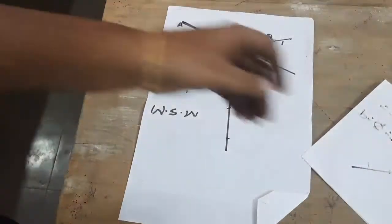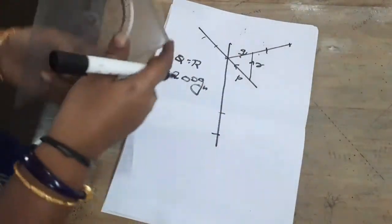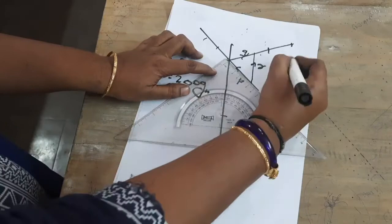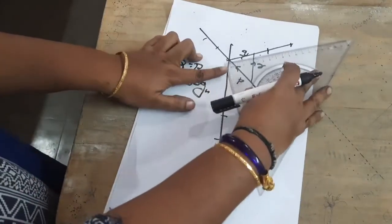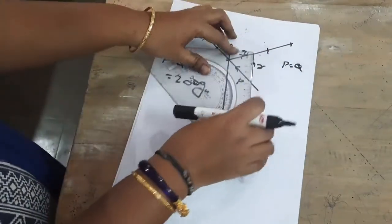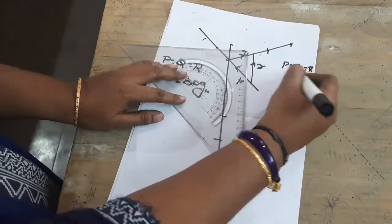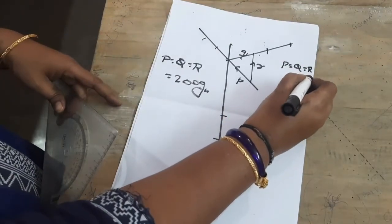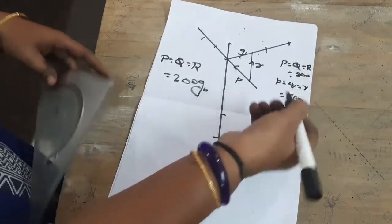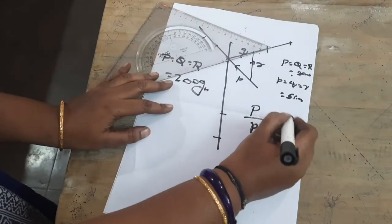For the 200-gram reading: p = 5 cm, q = 5 cm, r = 5 cm. So P/p = Q/q = R/r — all are equal, meaning the triangle law is verified. For the 100-gram reading: p = 5 cm, q = 5 cm, r = 5 cm. Capital P, Q, R = 200 grams. Small p, q, r = 5 cm. So triangle law is verified for all readings.